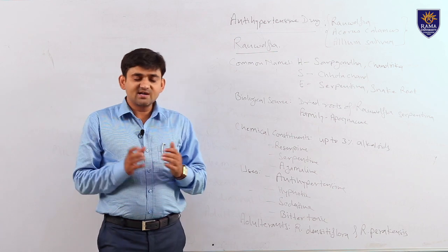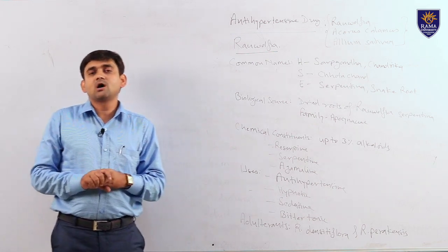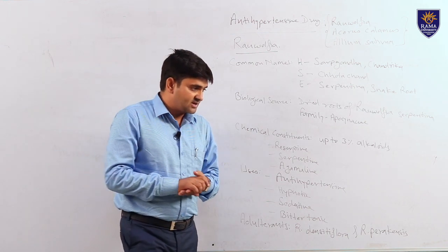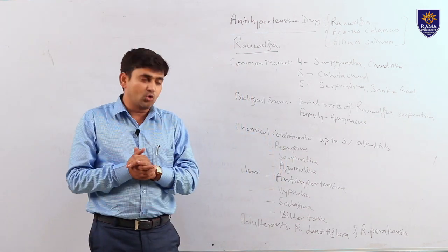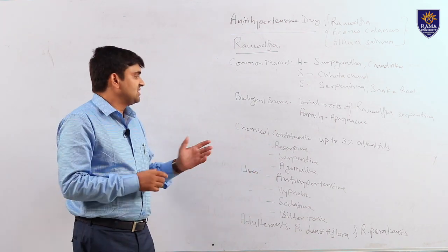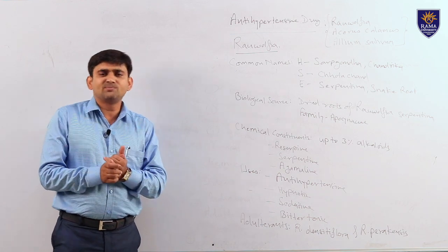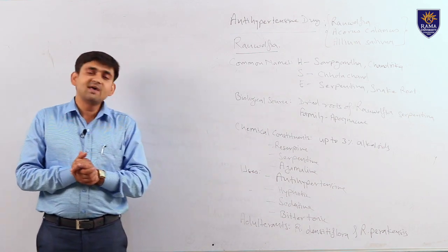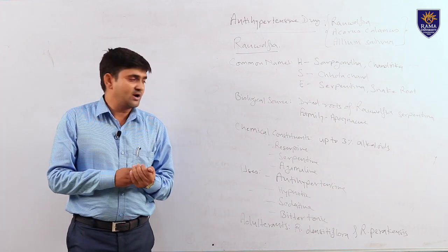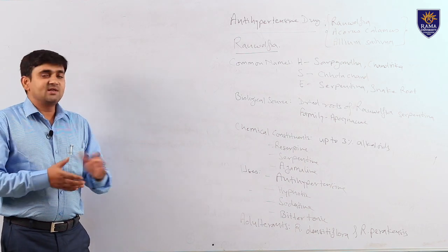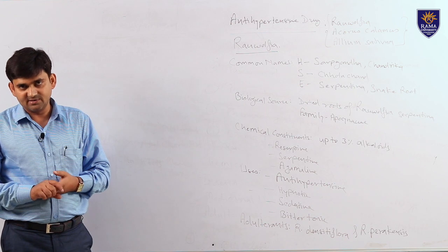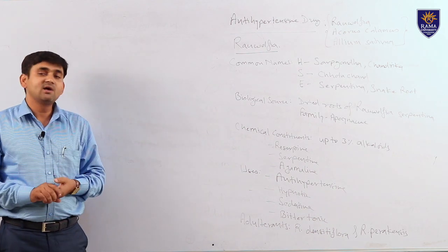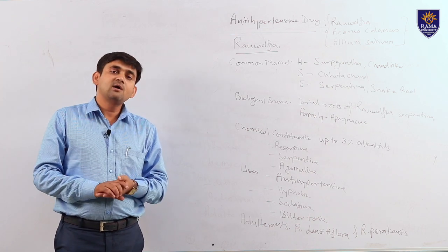Biological source: the drug is obtained from the dried roots of the plant Rauwolfia serpentina, belonging to family Apocynaceae. Morphology: the color of the drug is pale brown, odor is odorless, and taste is bitter. Chief active constituents: the drug contains approximately 1.5 to 3 percent alkaloids. Main alkaloids are reserpine, serpentine, ajmaline, and many other alkaloids. Reserpine is mainly responsible for antihypertensive activity. Uses: it is used as an antihypertensive, hypnotic, sedative, and bitter tonic.